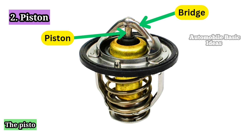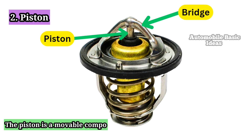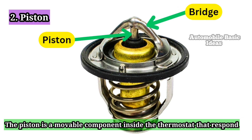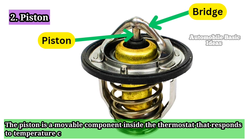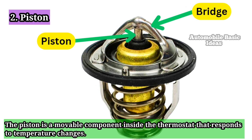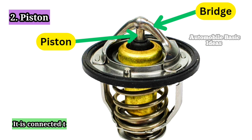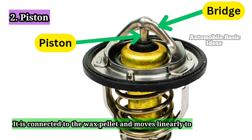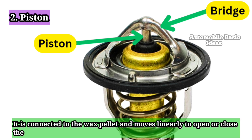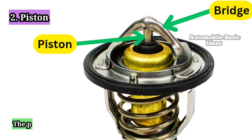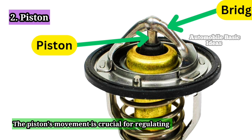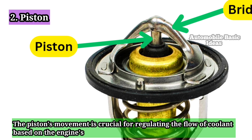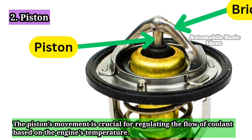Piston: The piston is a movable component inside the thermostat that responds to temperature changes. It is connected to the wax pellet and moves linearly to open or close the valve. The piston's movement is crucial for regulating the flow of coolant based on the engine's temperature.